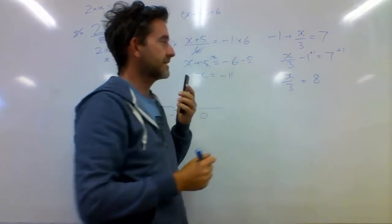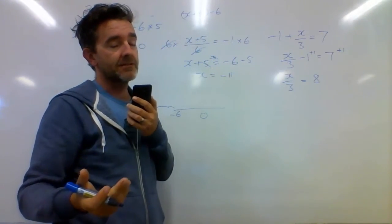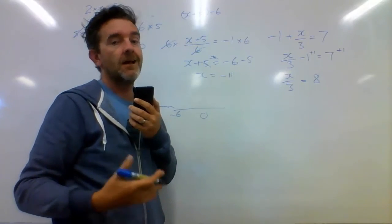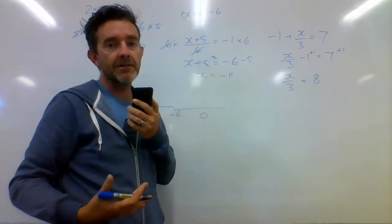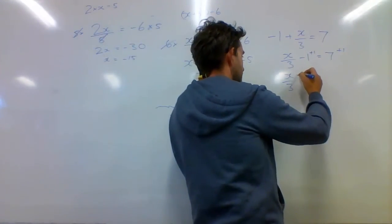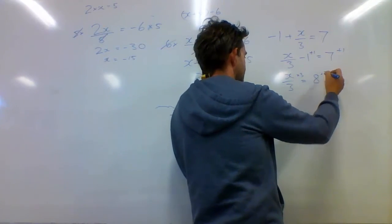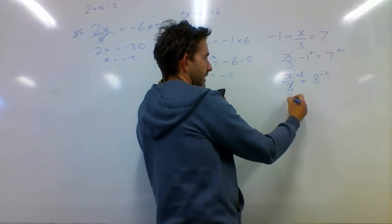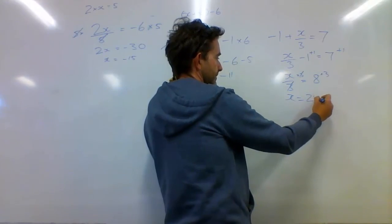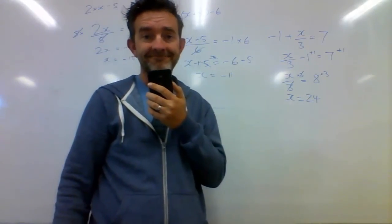And then to get rid of that 3 that I'm dividing into the x, I need to multiply by 3 on both sides. So I'm going to multiply by 3, multiply by 3. They cancel out, and I'm left with x being equal to 24. Okay, so that worked out nicely.